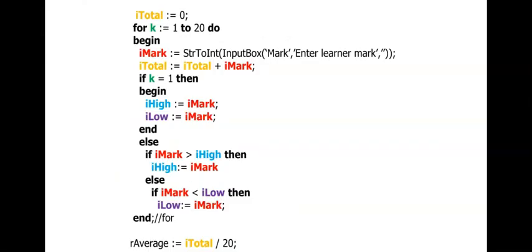This is an example of code you have seen something similar to before but not using loops. The question asks me to enter 20 learners' marks, then calculate their average and also display the lowest and the highest mark. So I have 20 marks to enter and therefore I'm using my for loop from 1 to 20. Very importantly, when you want to get input from the user inside of a loop, you will have to make use of an input box. The user will not have the opportunity to change an edit box while your loop is executing. So for input in any loop, whether conditional or a for loop, we are going to use an input box. Here I'm just adding the mark to a total to calculate the average at the end, and since the variable is on both sides of the assignment statement, I initialize it above the loop.